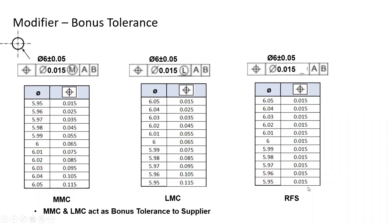To summarize: MMC is used for clearance fits and LMC for interference fits. With MMC, as hole diameter increases, clearance increases and bonus tolerance is given proportionately. With LMC, as hole diameter decreases, interference increases and bonus tolerance increases proportionately. Regardless of Feature of Size (RFS) applies when no modifier is specified in the feature control frame — the center of the hole must strictly lie within the specified tolerance zone regardless of any variation in hole size. No bonus tolerance is given.